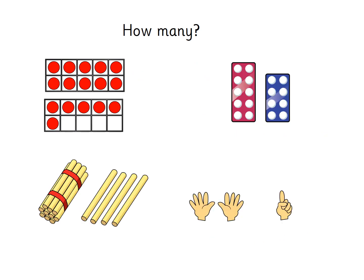Let's do the same again with four more representations. Starting with our tens frames — we know there's 10 in the top tens frame — let's count on: 10, 11, 12, 13, 14, 15, 16. So altogether we have 16 counters. Moving over to the numicon — the purple block is 10 — let's count on from 10: 10, 11, 12, 13, 14, 15, 16, 17, 18. There's a numicon block of 8, so 10 and 8 is 18.